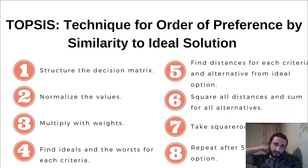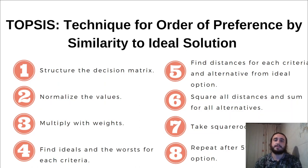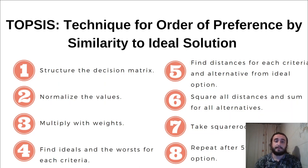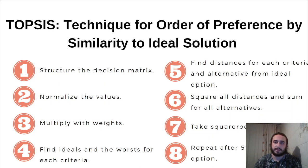To normalize, we get the square of each value for each criterion in each column. We sum the squares of each criterion, divide each value by the total of those squared numbers, and then take the square root. This normalizes our values.